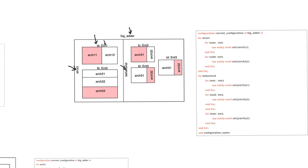Under the behavioral architecture, we also have multiple entities, each of which has two possible architectures. We have specific instances using the struct and behavioral architectures, and under each of them we use specific bindings. Instance ia is bound to architecture Arch11, and instance ib is bound to architecture Arch23. The shaded architectures are the architectures that we want to bind each instance to.